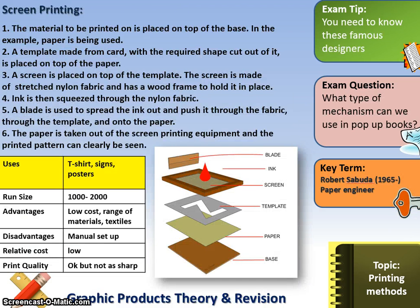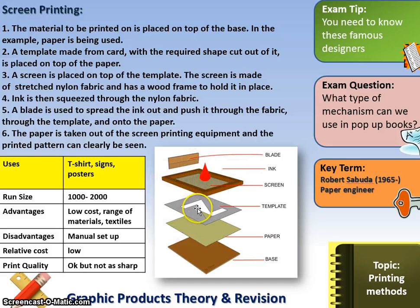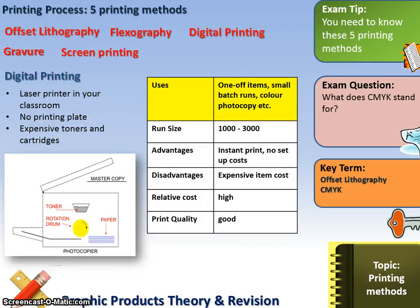Screen printing is considered the lowest form of printing. It is used for things like T-shirts, with a run size in the hundreds to thousands. It requires a manual setup — you need a template and a screen. You place the T-shirt underneath, put the screen over the top, smear the ink through the template, then remove it.